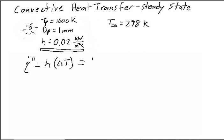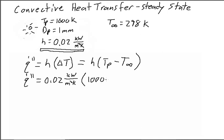So, that's equal to h times the temperature of the particle minus the ambient temperature. And so we can work that out to where our heat transfer per meter squared is equal to 0.02 kilowatts per meter squared kelvin times 1000 minus 298.